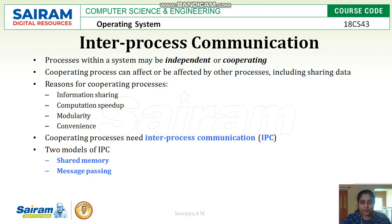It is very important to communicate messages from different independent processes or cooperating processes to each other. Cooperating processes can affect or be affected by other processes, including shared data. Reasons for cooperating processes include information sharing, computation speed up, modularity, and so on. This requires inter-process communication.